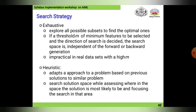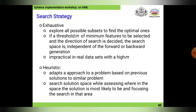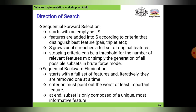Regarding direction of search: Sequential Forward Selection (SFS) starts with an empty set S. Features are added into S according to criteria distinguishing the best feature, pair, or triplet. S grows until it reaches the full set of original features. The stopping criteria can be a threshold for the number of relevant features m, or simply the generation of all possible subsets in brute force mode.